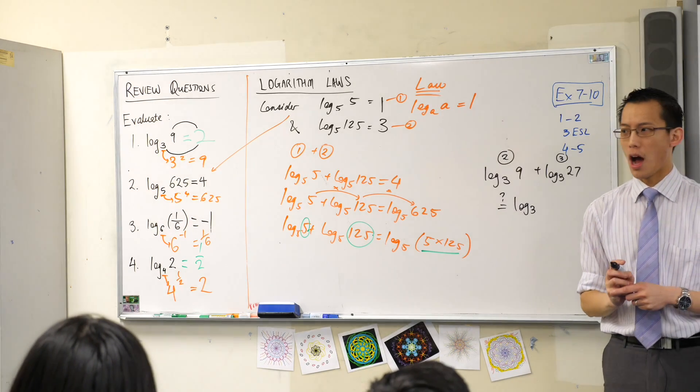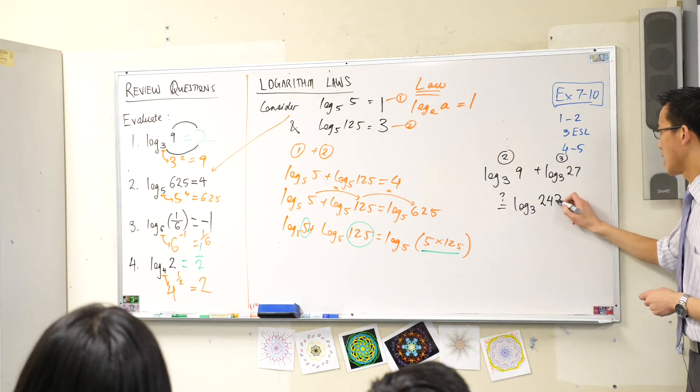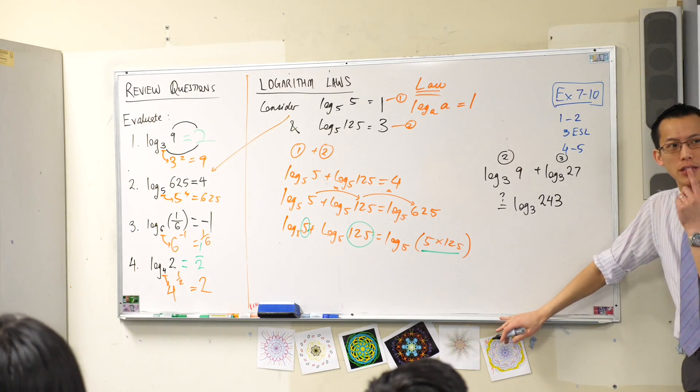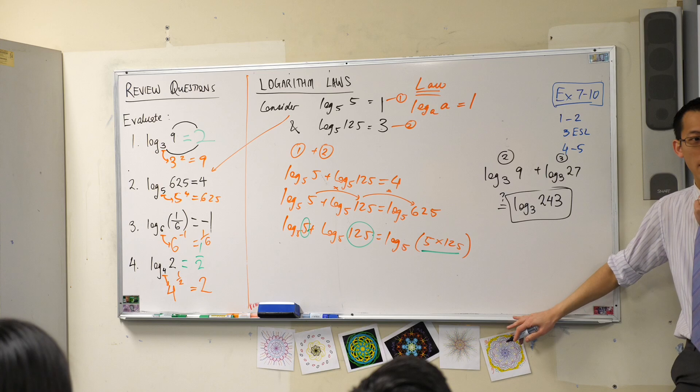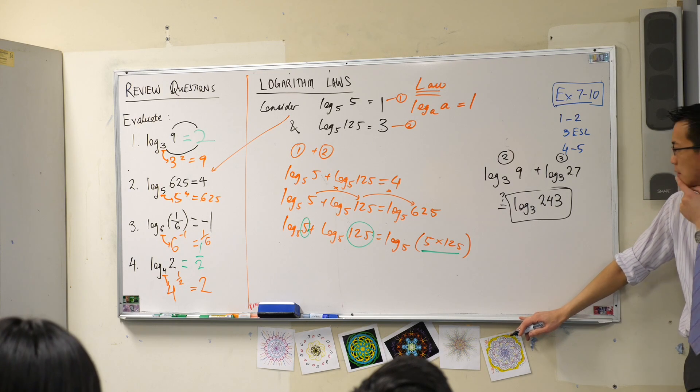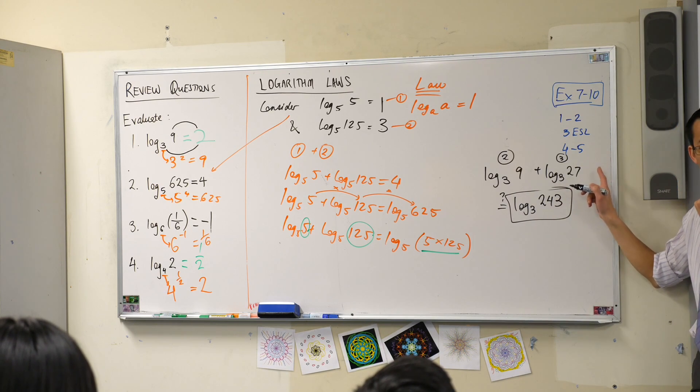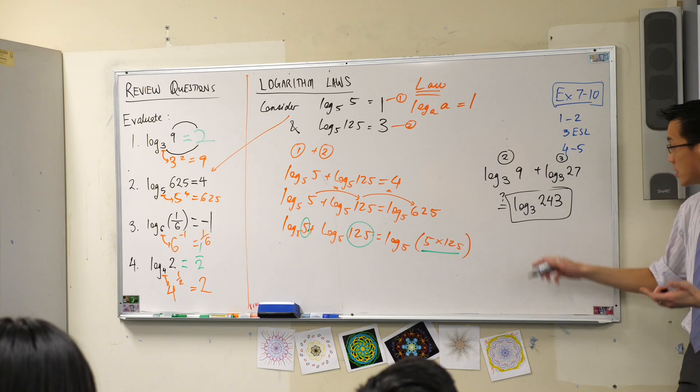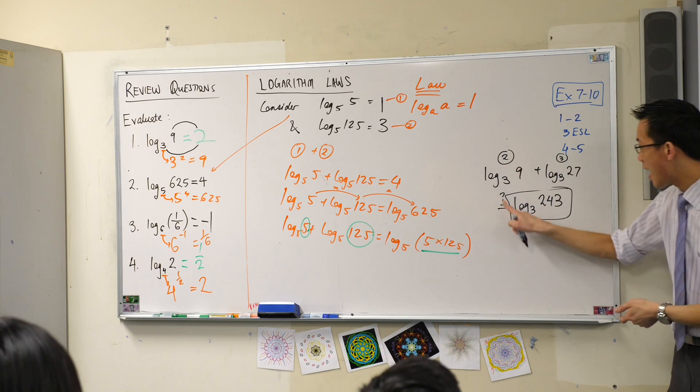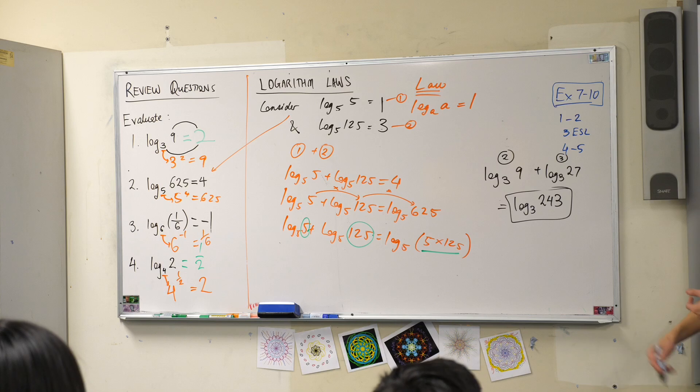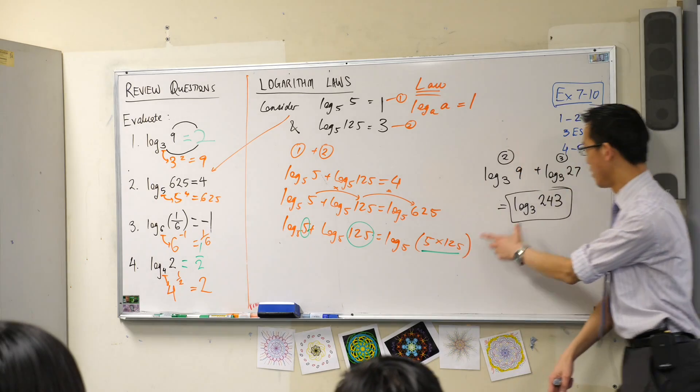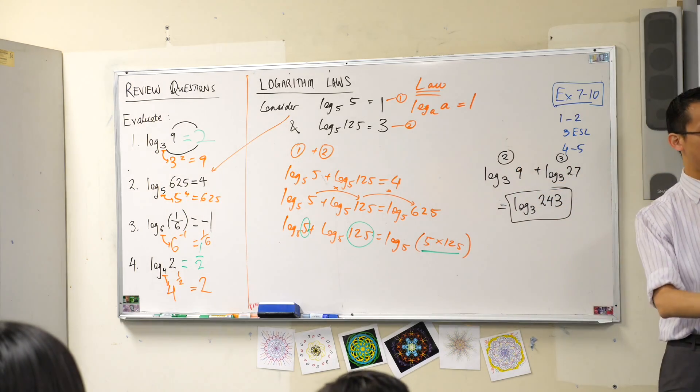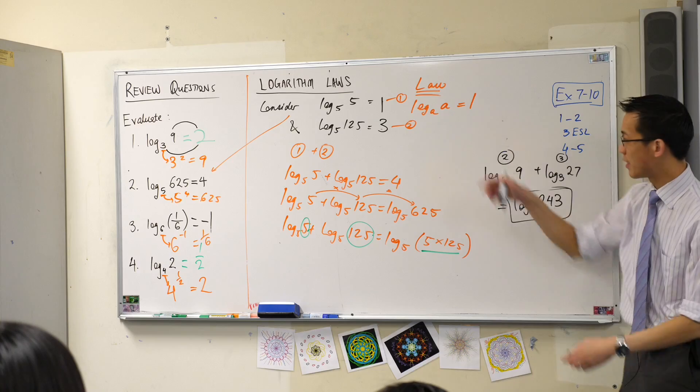Is that equal to log base 3 of 243? Does it work? If this is the question I gave you, what would you find as the value? 3 to the power of what gives you 243? And it's 5, isn't it? 2 plus 3 is 5. It is equal. So this seems to be true. I can add logs. If you add logs, you're going to multiply together the numbers in those logs, so long as the base is the same.